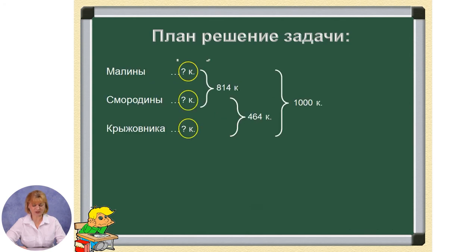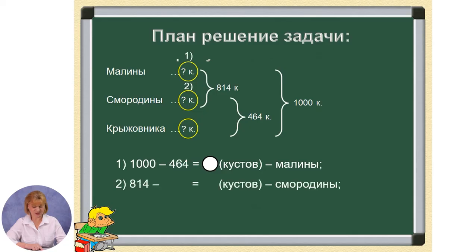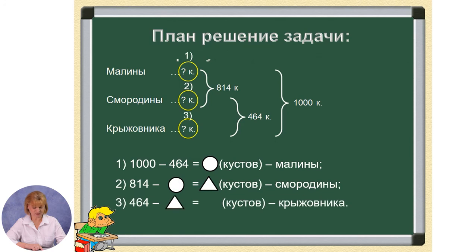Составим план решения задачи. Чтобы найти количество малины, нужно из общего количества кустов вычесть количество кустов смородины и крыжовника — это первое действие. Чтобы найти количество смородины, нужно из количества малины и смородины вычесть количество малины — это второе действие. Чтобы найти количество крыжовника, нужно из количества смородины и крыжовника вычесть количество смородины — это третье действие.